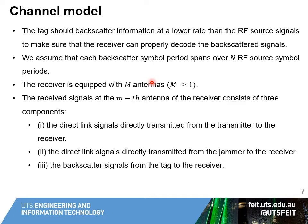For the channel model, in ambient backscatter communication the tag should backscatter information at a lower rate than the RF source signal to ensure the receiver can properly decode the backscatter signal. We assume each backscatter symbol spans over N RF source symbols. The receiver is equipped with M antennas. The received signal at the receiver consists of three components: the direct link signal from the transmitter, the direct link signal from the jammer, and the backscatter signal from the tag to the receiver.